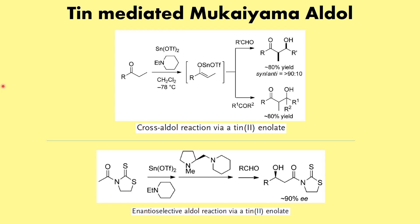Apart from titanium chloride, other Lewis acids can also be used in Mukaiyama aldol reactions. For example, tin triflate is used with a base to form a tin enolate; upon addition of aldehyde, you get the desired syn product. The syn:anti ratio here is greater than 90:10, confirming that syn is always the major product. This is because the addition between the tin intermediate and the aldehyde takes place via an open chair transition state.